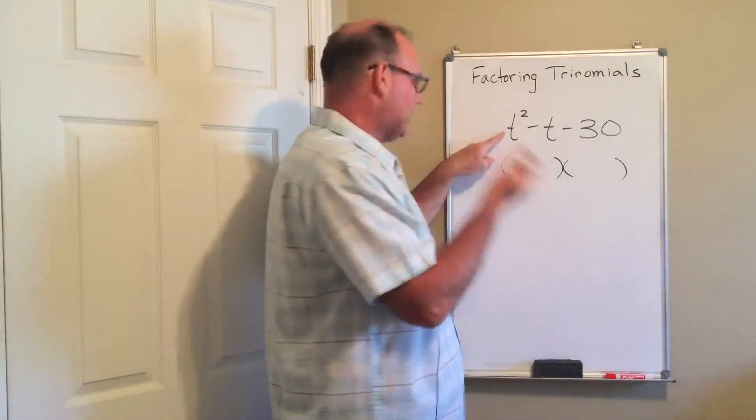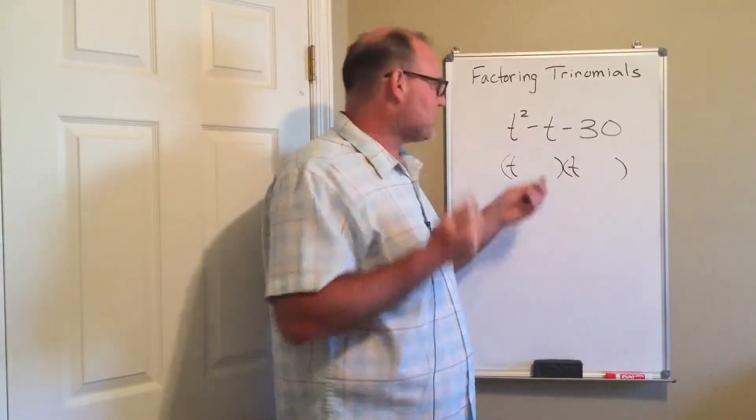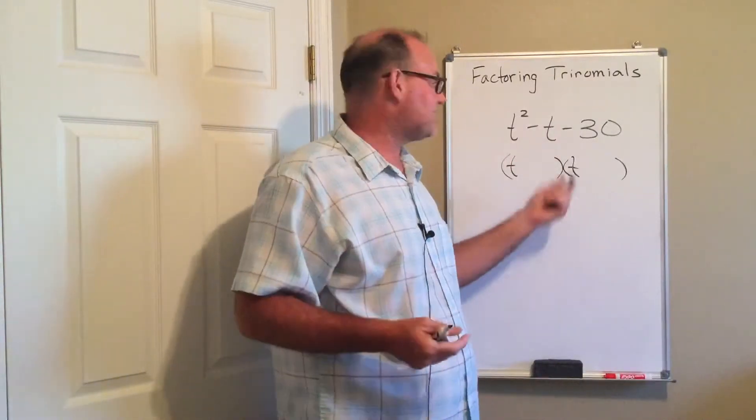My t squared is going to be t times t. As always with all of my trinomials, I want to look for the clues that tell me about my signs.